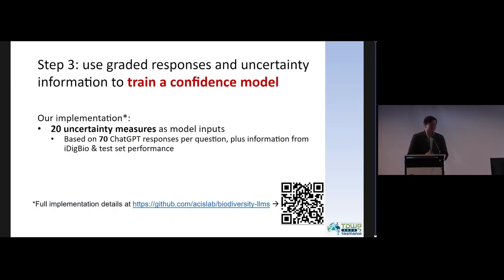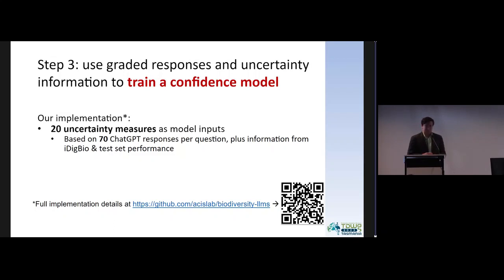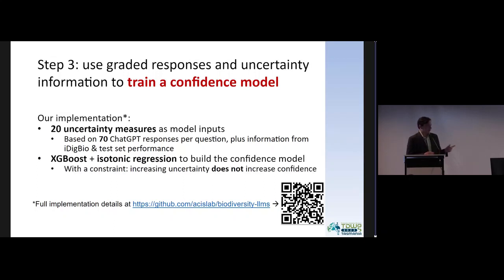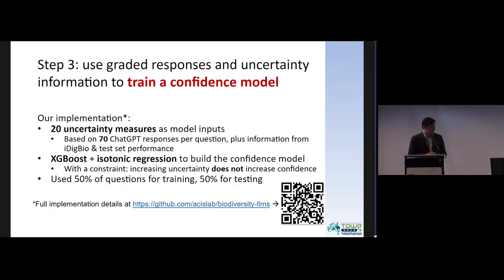In our implementation, we came up with 20 uncertainty measures — not all totally unique, some are derivative of each other. To collect these 20 uncertainty measures, we had to gather about 70 ChatGPT responses per question. We also pulled in some external information from iDigBio and other test datasets. Our model uses XGBoost with isotonic regression, with the constraint that any increase in our uncertainty inputs should not increase confidence. We used about 50% of our questions for training and 50% for testing.